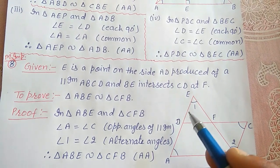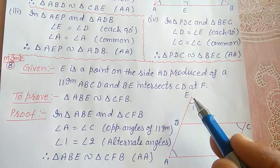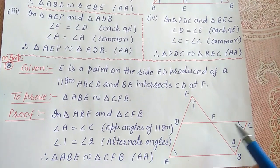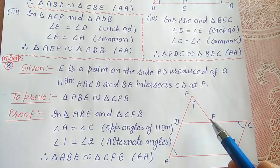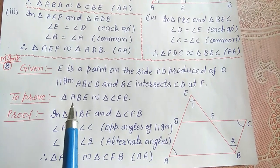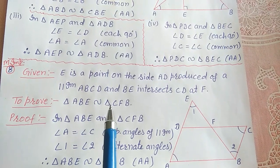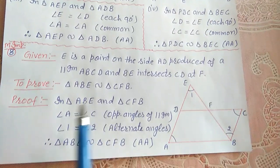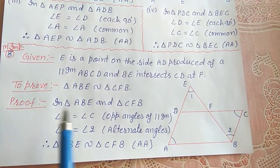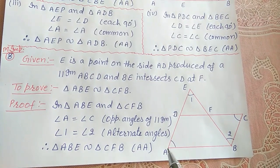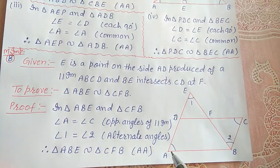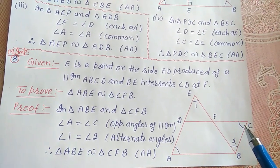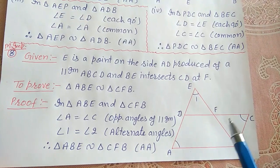AD को बढ़ाने पर यह E तक जाता है और BE, CD को F पर intersect करता है। हमें prove करना है कि triangle ABE similar होगी triangle CFB के। इन दोनों triangles को लेते हैं: triangle ABE और triangle CFB।